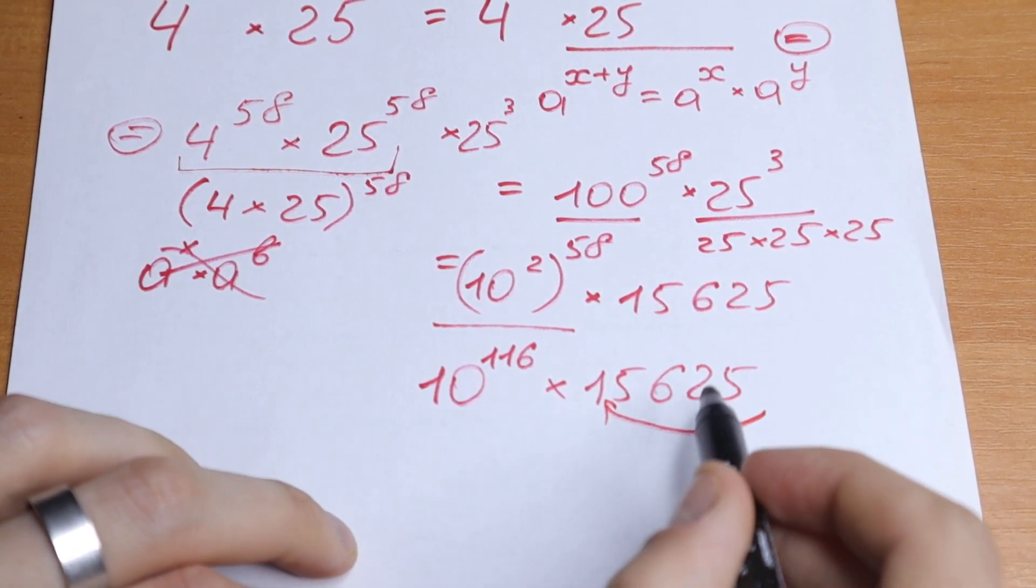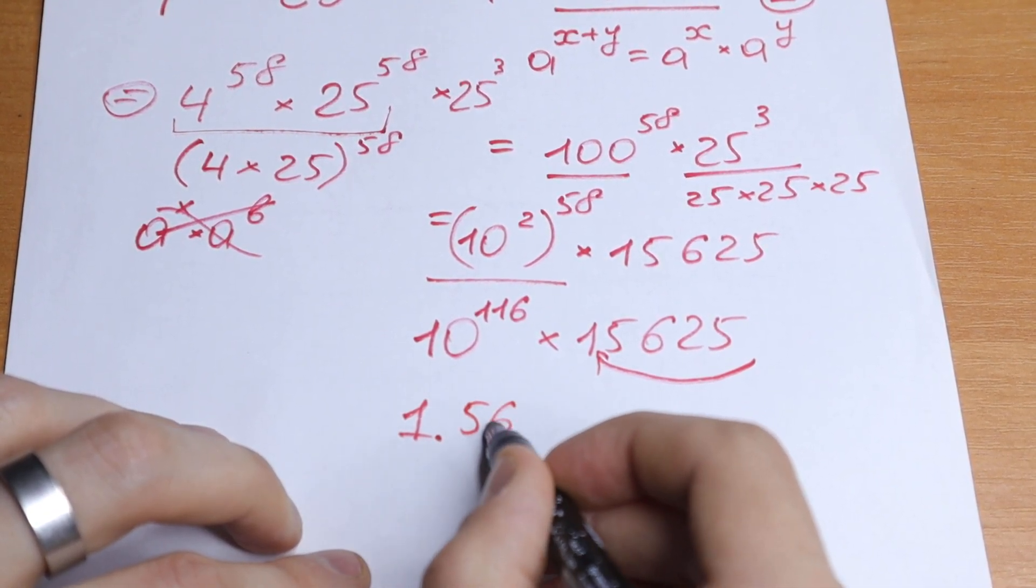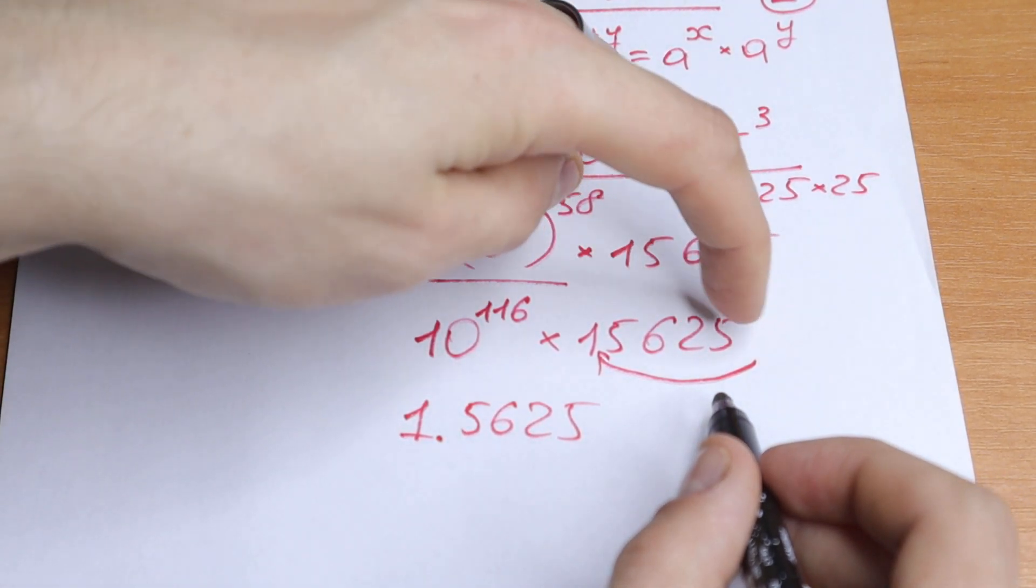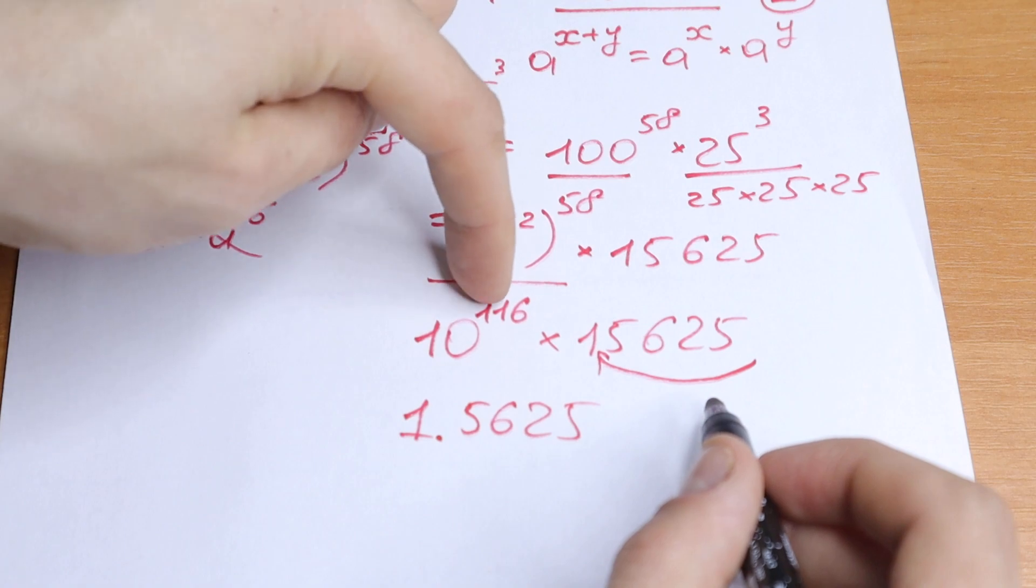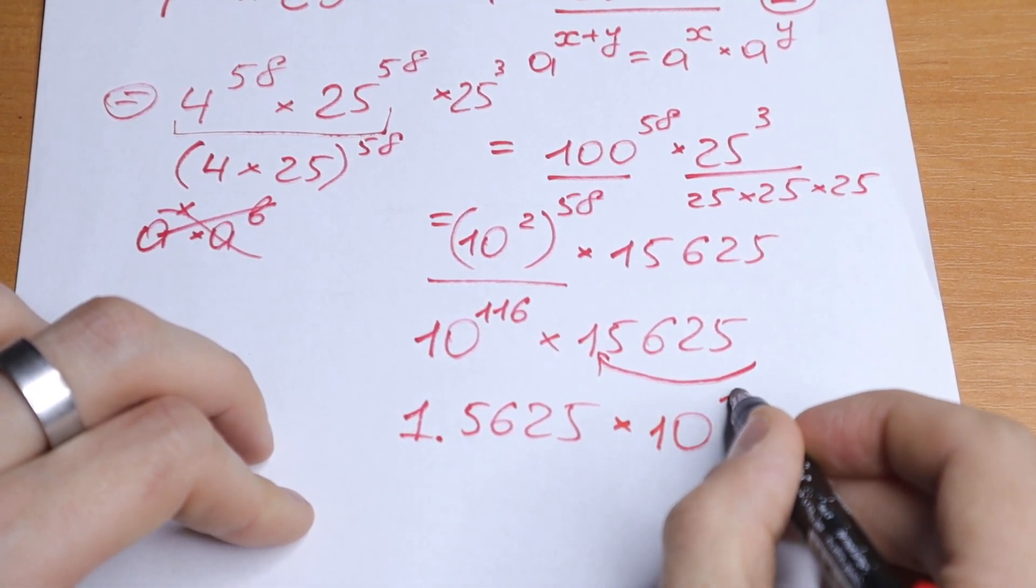For example, if we write this element as 1.5625, we need to add 4 digits to this power, and we need to multiply this by 10 to the power 120.